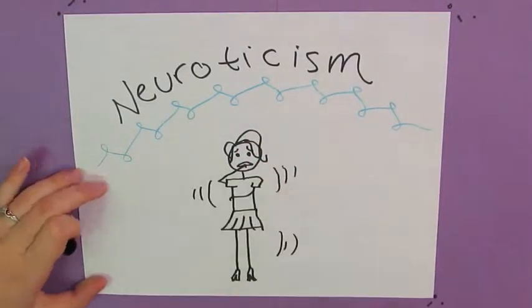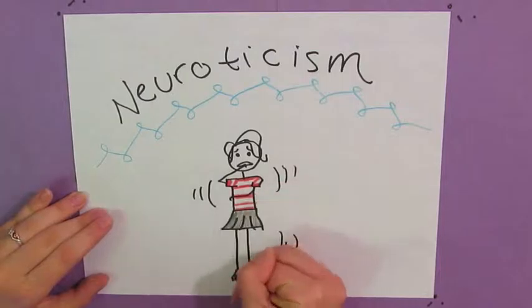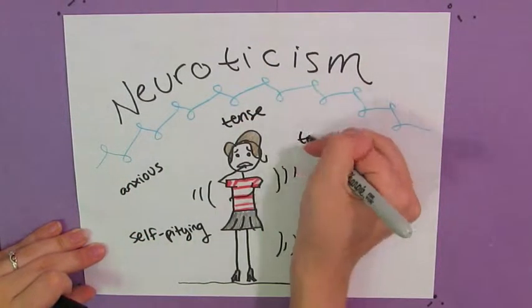Finally, people who are neurotic tend to be anxious, self-pitying, tense, touchy, unstable, and worrying.